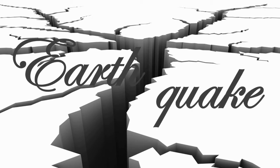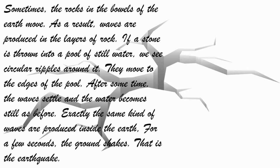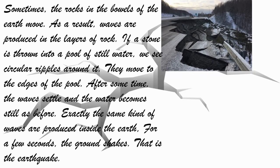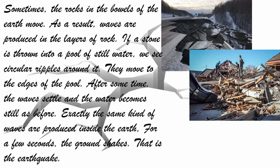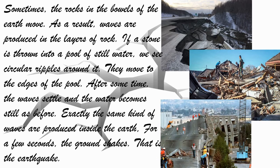Now we will study what is the meaning of earthquake in detail. Sometimes the rocks in the bowels of the earth move, and as a result waves are produced in the layers of rock. See the image — how the road collapsed. If a stone is thrown into a pool of still water, we see circular ripples around it that move to the edges of the pool. After some time the waves settle and the water becomes still as before. Exactly the same kind of waves are produced inside the earth. For a few seconds the ground shakes — this is called an earthquake.